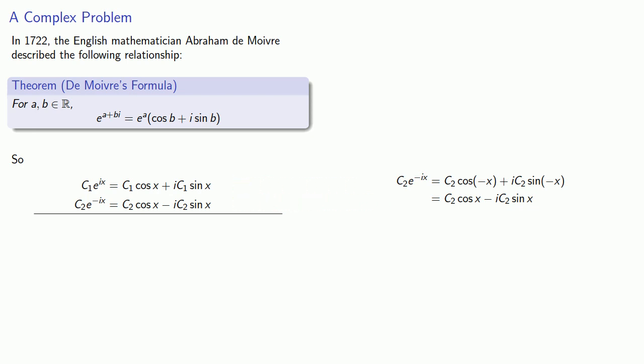So when we add our two solutions, we can express that sum as (c₁ + c₂)*cos(x) + i*(c₁ - c₂)*sin(x).